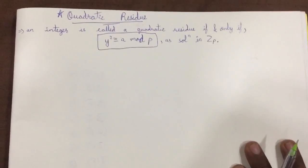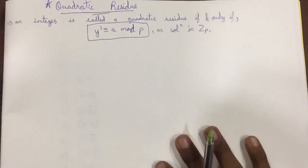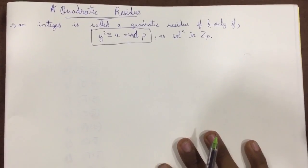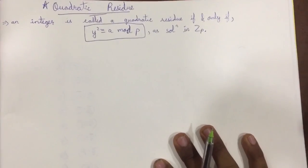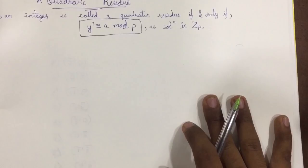Hello friends, welcome. In this lecture we are going to learn about what is quadratic residue. So an integer is called a quadratic residue if and only if y² congruent to a mod p has solution in Zp.